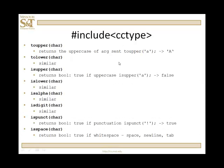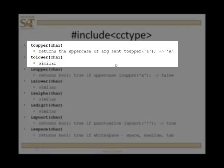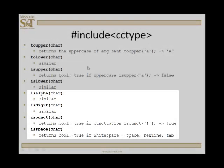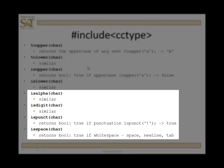When you '#include cctype', that gives you access to character manipulation functions: toupper, tolower, isupper, islower, isalpha, isdigit, ispunct, isspace. These functions do pretty much as their names describe. toupper returns the uppercase version of the argument — so toupper of lowercase 'a' returns uppercase 'A'. tolower does something similar. isupper returns true or false if it's uppercase or not. islower, isalpha, isdigit, ispunct, isspace work similarly.